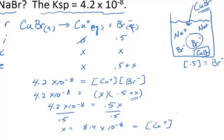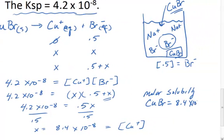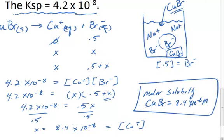And so since the copper ion is in a one-to-one ratio with this formula unit, I would say the molar solubility, in this case, in the case with the common ion present, for the copper bromide equals 8.4 times 10 to the minus 8 molar.